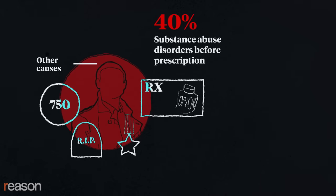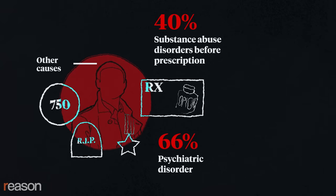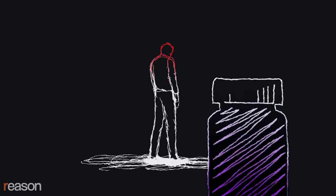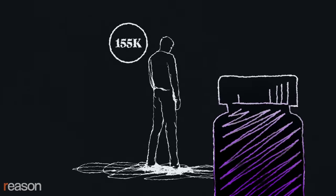40% of those patients had been diagnosed with substance abuse disorders in the 12 months before getting an opioid prescription. 66% had been diagnosed with a psychiatric disorder. A population with these characteristics is likely to have a higher than normal frequency of overdose deaths with or without legal opioid prescriptions. Perhaps most important, this study ignores the benefits of opioid pain relief to the 155,000 patients who didn't overdose. Even if taking prescription opioids does increase the risk of overdose deaths — which this study doesn't demonstrate — many patients would gladly accept the risk for the quality of life improvement of diminished pain.